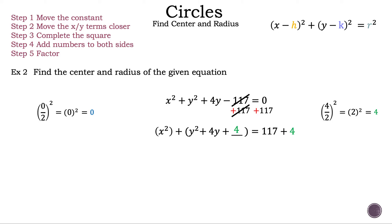And that is why we added one blank spot for the y quadratic. Now let's factor the x quadratic — we don't need to, but we are going to rewrite it as the quantity of x minus 0 squared. Now let's factor the y quadratic — our result is the quantity of y plus 2 squared. Now let's add the constants 117 and 4, and the result is 121. Now we have the quantity of x minus 0 squared plus the quantity of y plus 2 squared is equal to 121.